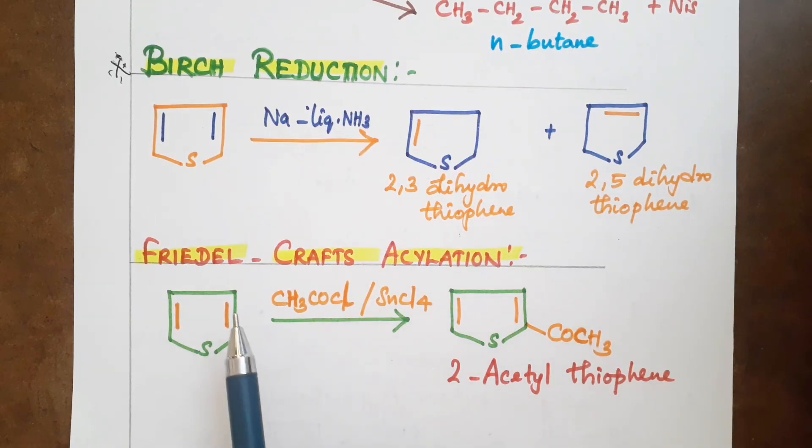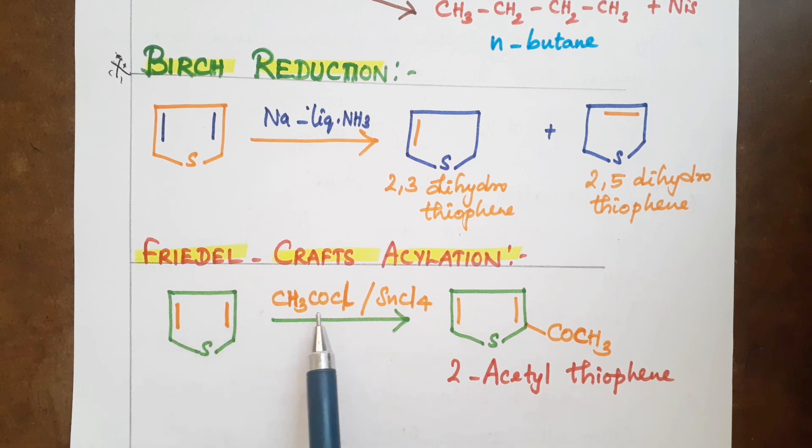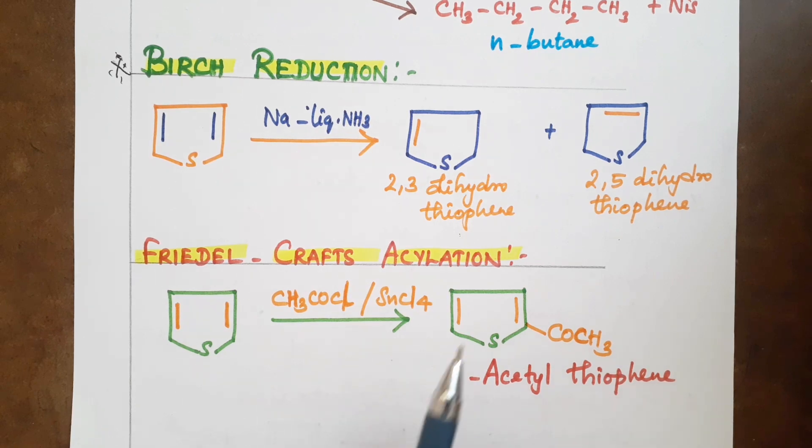Next reaction is Friedel-Crafts acylation. Thiophene undergoes acylation in presence of acetyl chloride, CH3COCl, in presence of stannous chloride SnCl4. This gives 2-acetylthiophene.